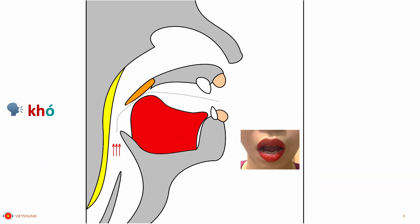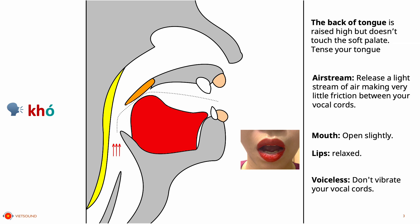The KH sound always occurs at the beginning of the word. Now let's see how to pronounce the sound. The back of the tongue is raised high, but doesn't touch the soft palate.